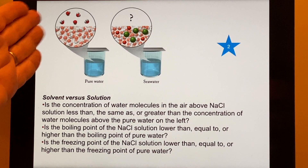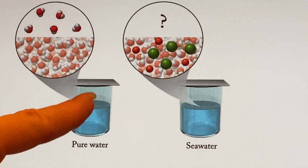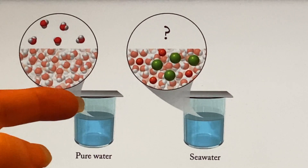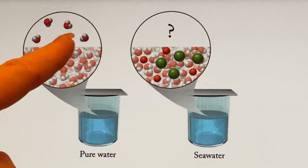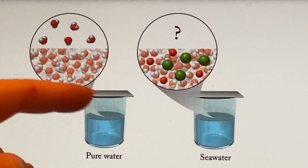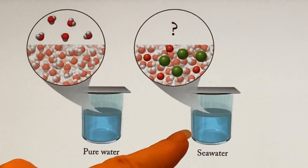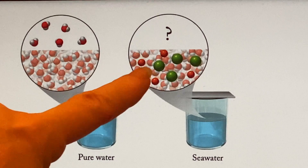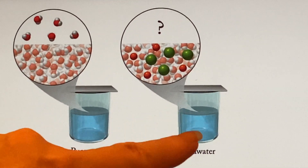Here we have two beakers full of liquid — in one case it's pure water, in the other case it's seawater. They're both capped off, so you know that you would be trapping whatever is evaporating above the liquid. We know that if we have pure water there will be some water molecules above the surface. If you've kept a terrarium, you'd notice drops of water form on the glass and trickle back down — it's in some sort of equilibrium. Over here we have seawater — it's got ions and dissolved salts like sodium chloride.